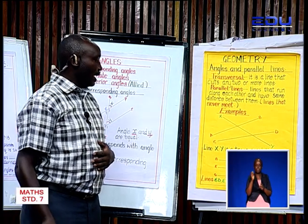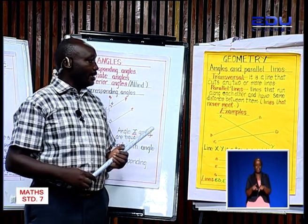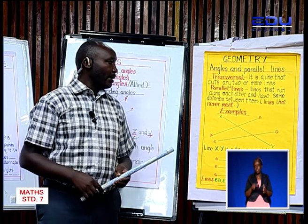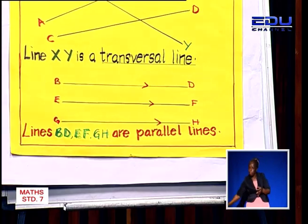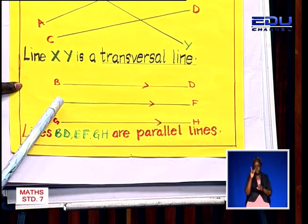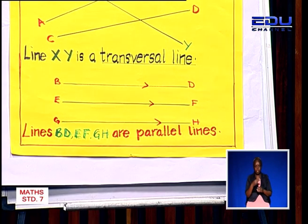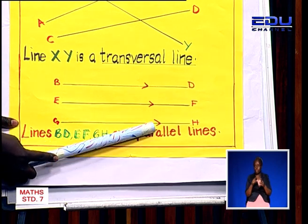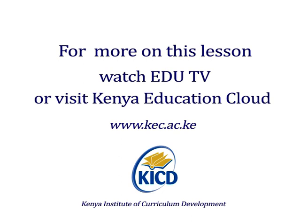We're now going to look at parallel lines. We have said that parallel lines are lines that shall never meet, or lines that run along each other and have the same distance between them. If you look at these ones, we can say line BD, line EF, and line GH are parallel lines. We are able to note that they are parallel lines because of the sign that is normally given to us. This sign means that the lines are parallel, and this sign also indicates parallel lines.